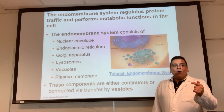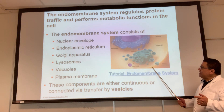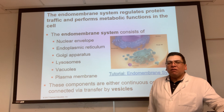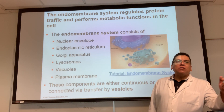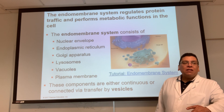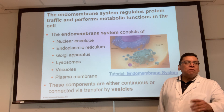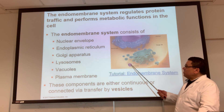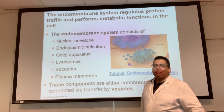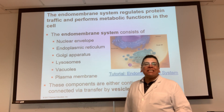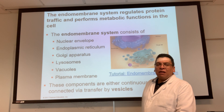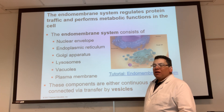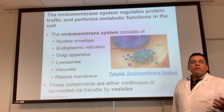Membrane proteins eventually find themselves embedded in the cell membrane — like a sodium channel protein, a glucose transporter, a receptor, or an insulin receptor. The other kind of protein the endomembrane system makes is hydrolytic enzymes. Those hydrolytic enzymes are found in lysosomes, which are the recycling centers of the cell. These enzymes break down macromolecules, food particles, and recycle dead organelles.